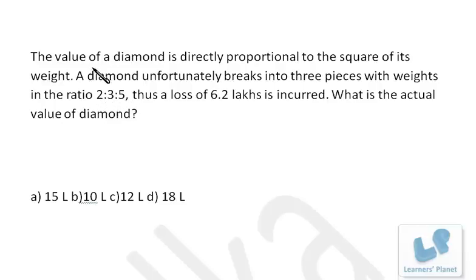And the value is directly proportional to square of its weight, right? That means the value must be 100x² initially. Now the individual parts are 2x, 3x, and 5x. So the value of this part must be 4x², value of this part must be 9x², and value of this part must be 25x².